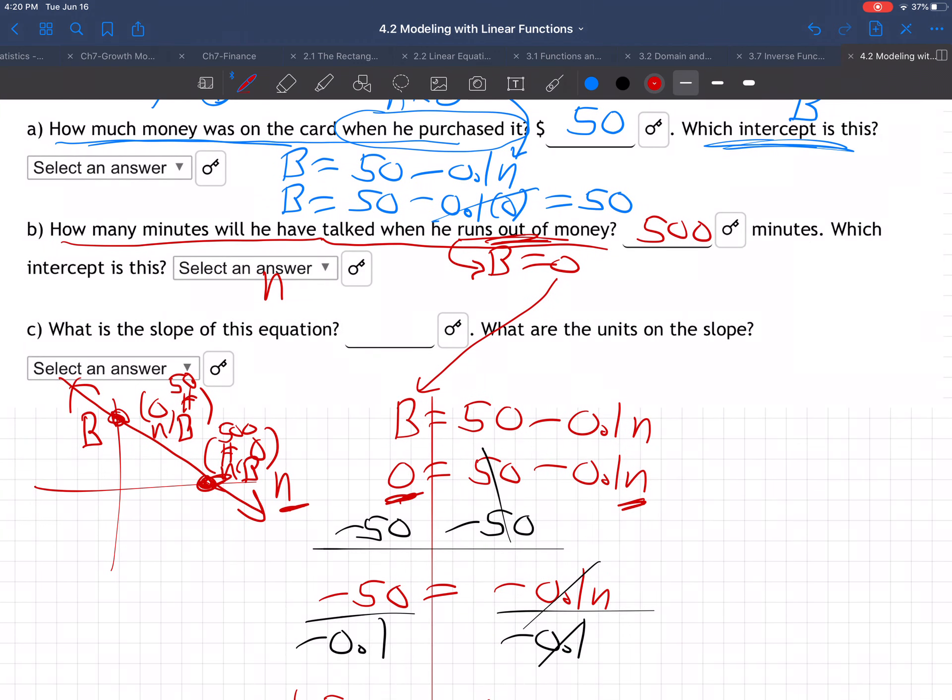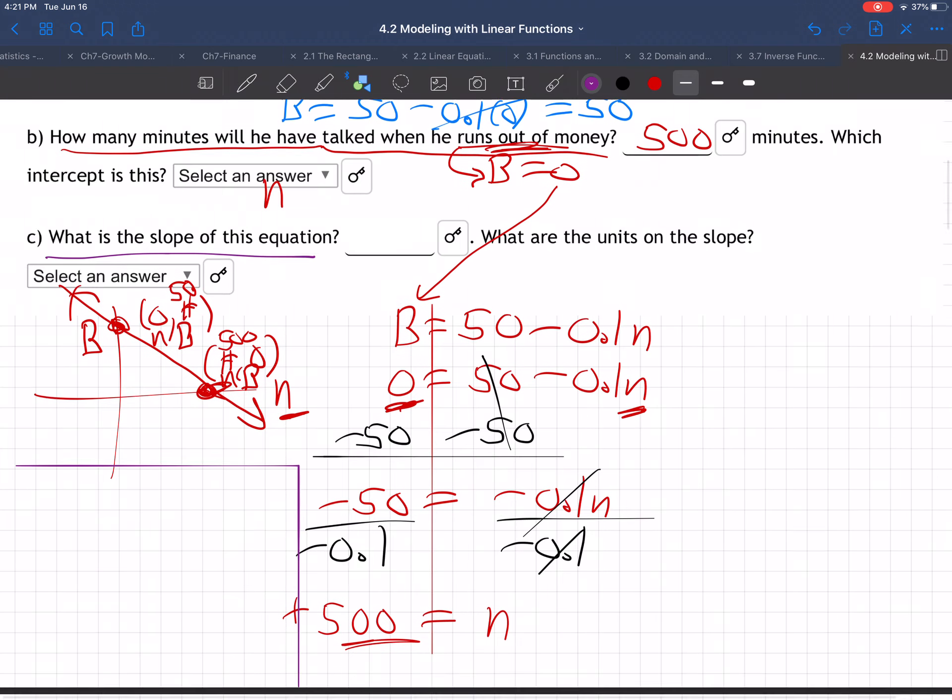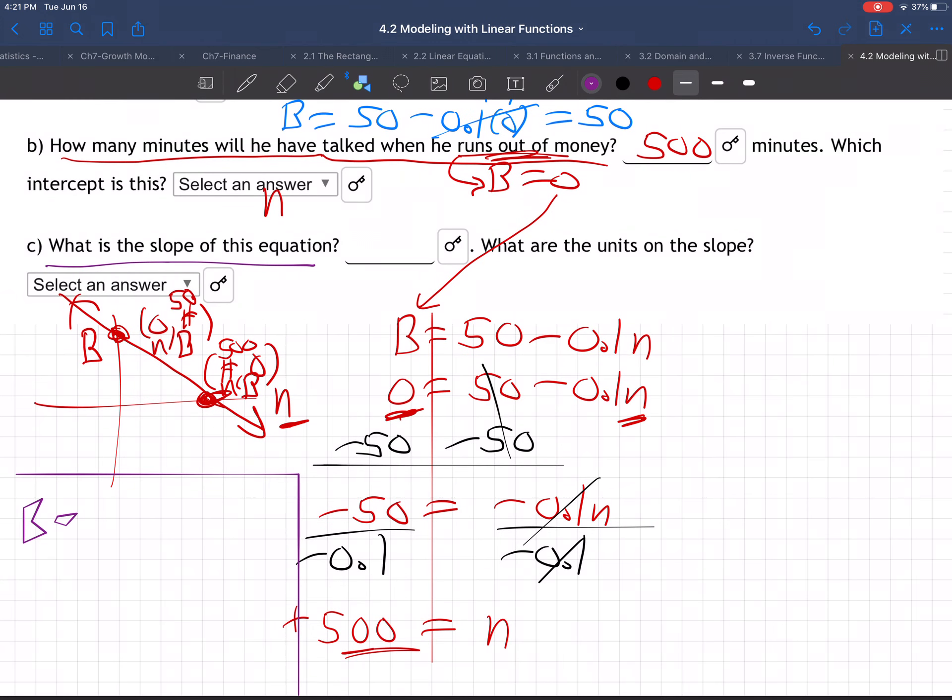Final question: What is the slope of this equation? In B = 50 - 0.1N, the slope is the coefficient of N, which is -0.1. In a linear equation, the slope is the number next to the variable when one variable is alone on the left side.